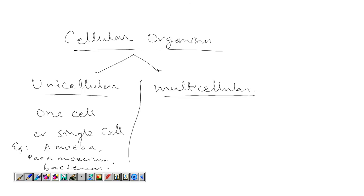And multicellular organisms are the organisms made up of many cells. Examples are plants and animals and some fungi.